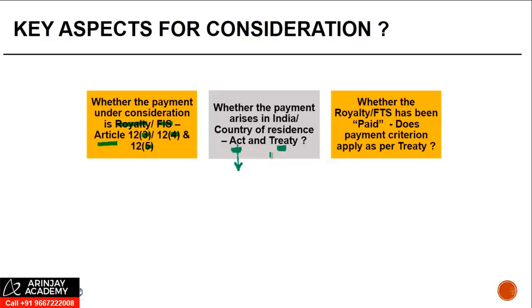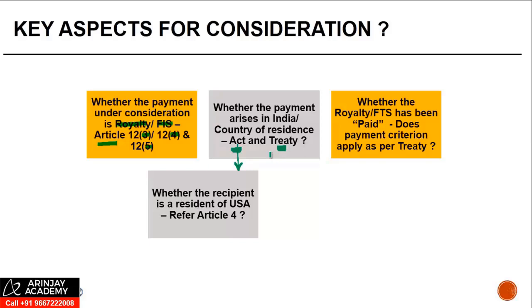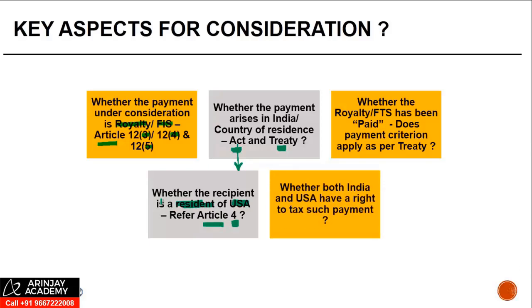The fourth aspect is whether the recipient is a resident of the USA — the clause says 'paid to a resident of the other contracting state,' so you need to find out whether the person qualifies as a resident of USA, and for that you need to apply Article 4 of this treaty. Finally, whether both India and USA have a right to tax such payment — Paragraph 1 gives a non-exclusive right to the USA to tax such payment, and the right of India will come in the next paragraph.